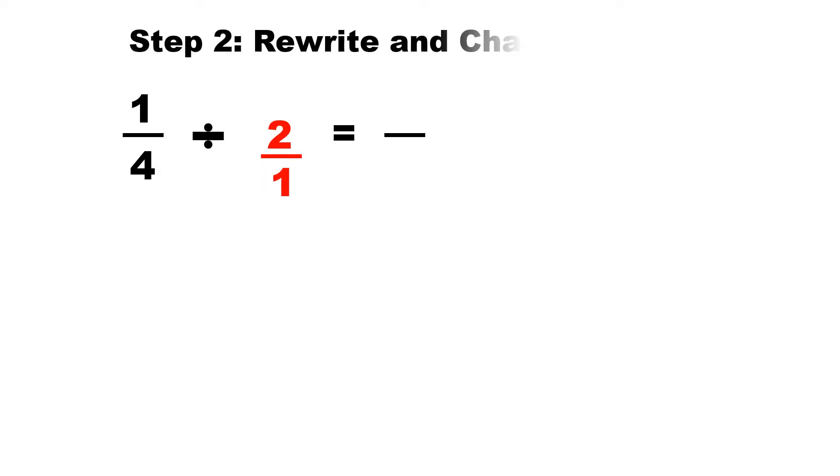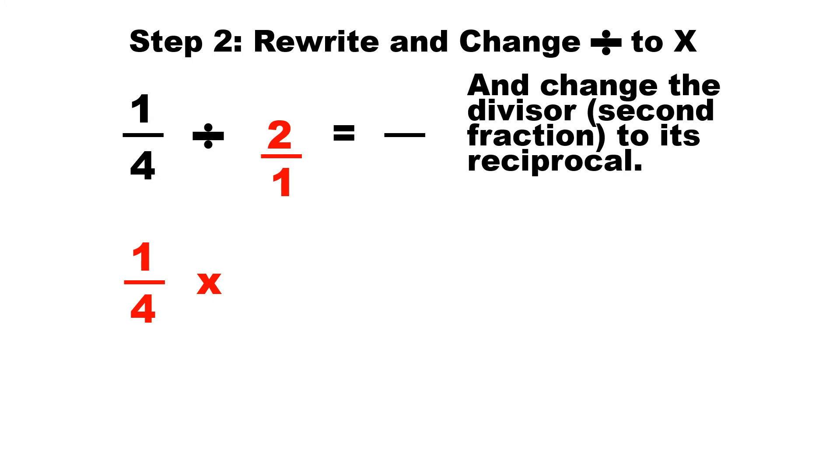Step two is we will rewrite and change the division to a multiplication. So the 1/4 fraction will stay the same, 1/4. Instead of division, we make it multiplication. And we change the divisor, which is the second fraction, to its reciprocal.